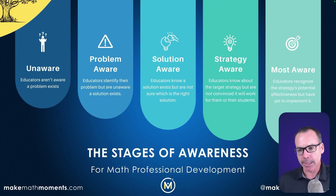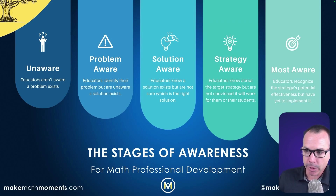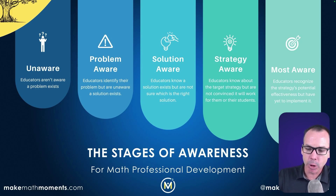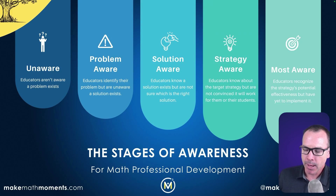The fourth stage is strategy aware — educators know about the target strategy you're working with, but maybe they're not convinced it's going to work yet for their students. If they were in solution aware, they might say: I see the solution you're providing, and I see another solution. But in strategy aware they're saying: I see this particular strategy, but I'm not yet convinced it's for me.